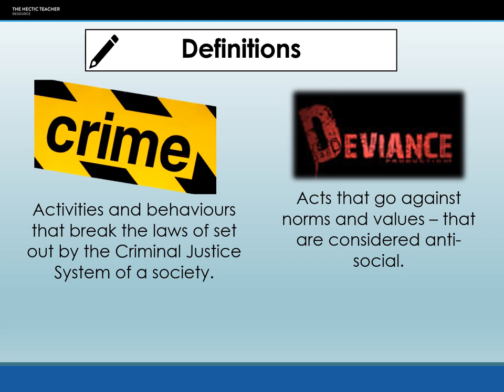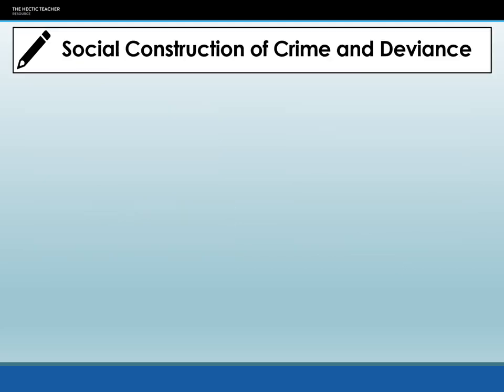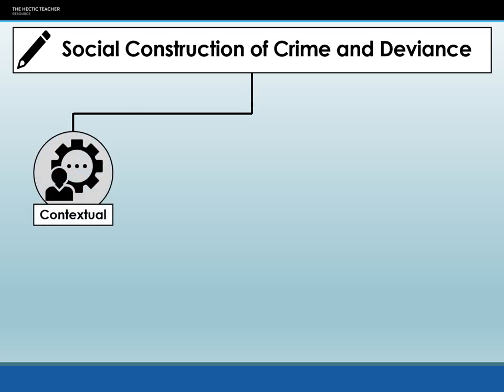These might seem like very clear-cut definitions. However, these definitions are not universal, because what is considered criminal or deviant varies around the world. There are four ways that crime and deviance are considered to be a social construction — meaning they are not naturally occurring phenomena, but instead created by individual societies. The first way is because it is context-dependent.